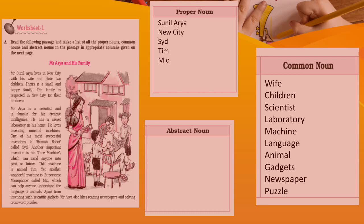In this particular paragraph you will find some abstract nouns. These are: kindness and intelligence. Intelligent is an adjective, and from the adjective 'intelligent' we get the noun 'intelligence.' Similarly, 'kind' is an adjective and from 'kind' we get 'kindness.' This is how we have many abstract nouns as well as proper and common nouns.